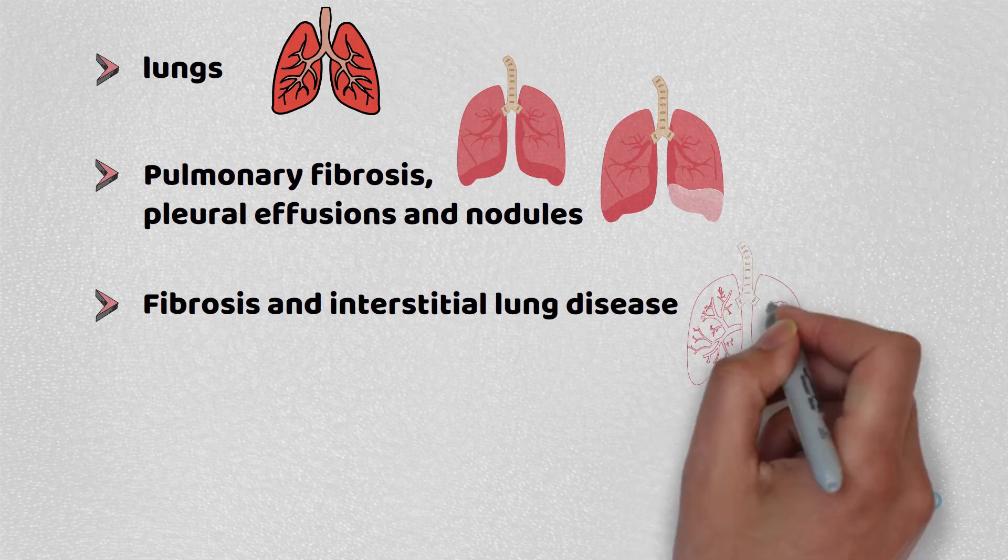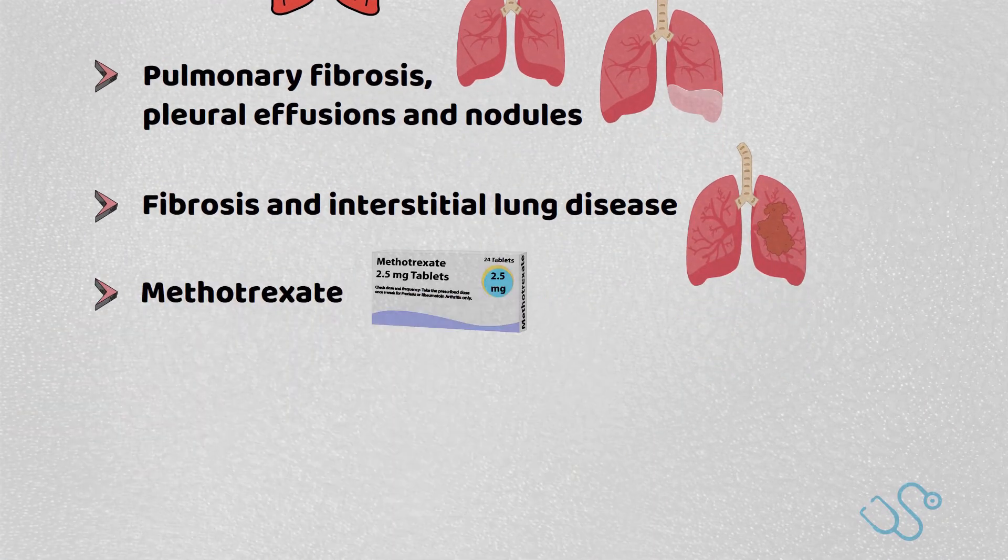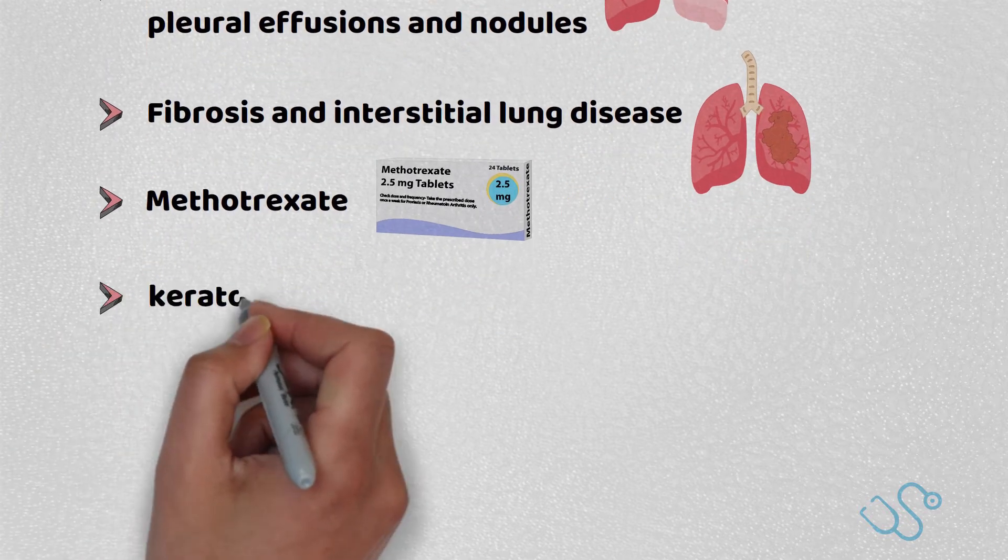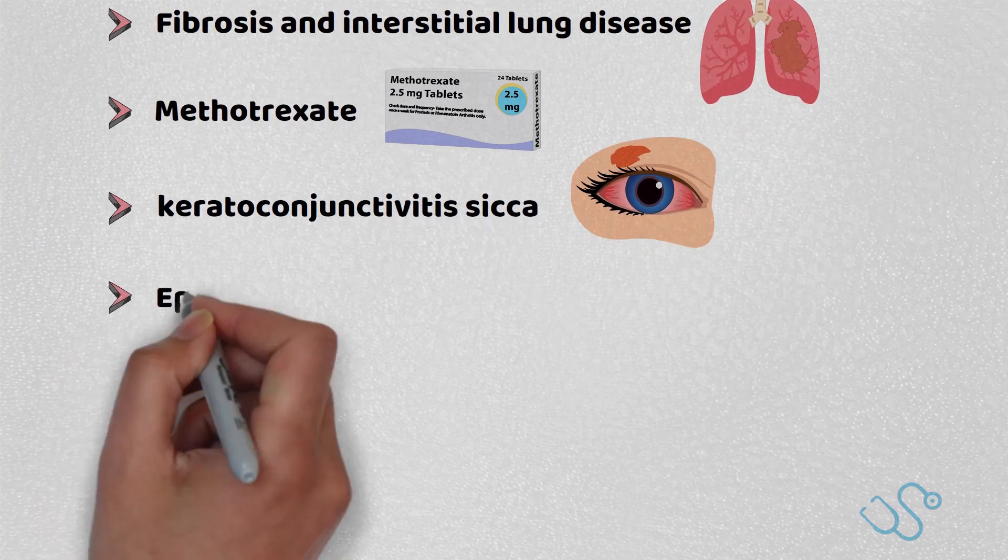Additionally, fibrosis and interstitial lung disease can occur as a result of therapy, particularly methotrexate. In the eye, the most common cause is keratoconjunctivitis sicca, a severe dry eye, as well as episcleritis and scleritis.